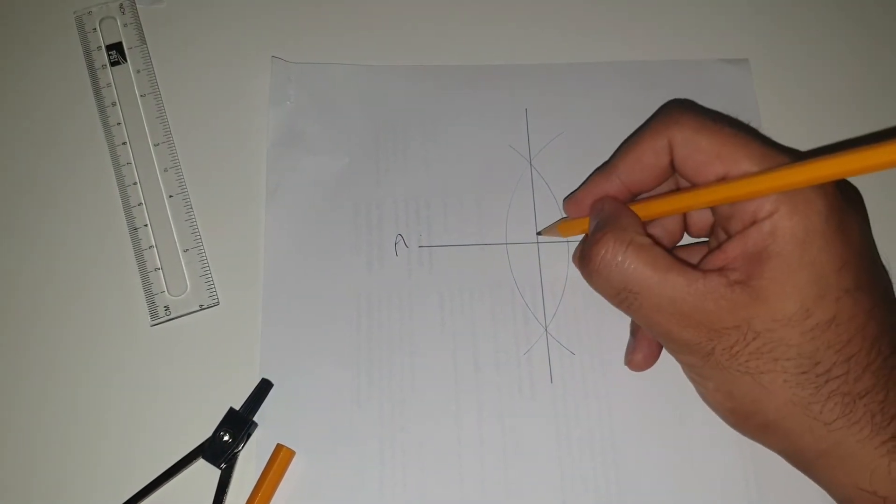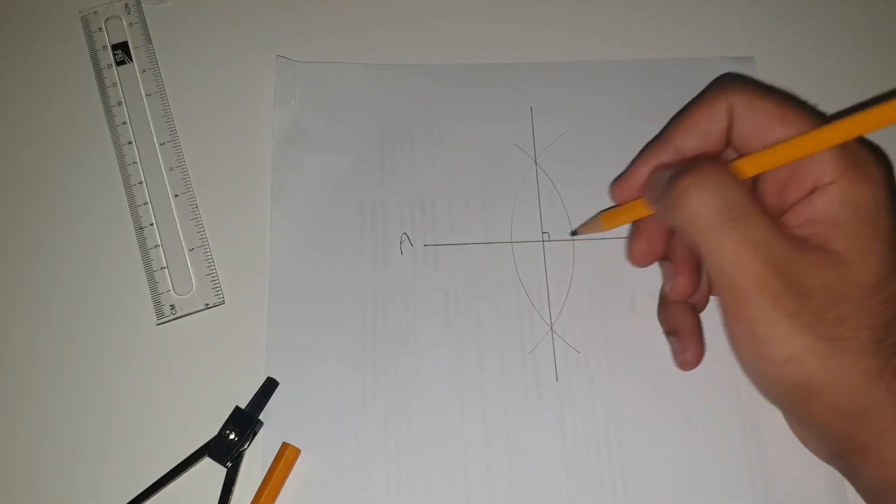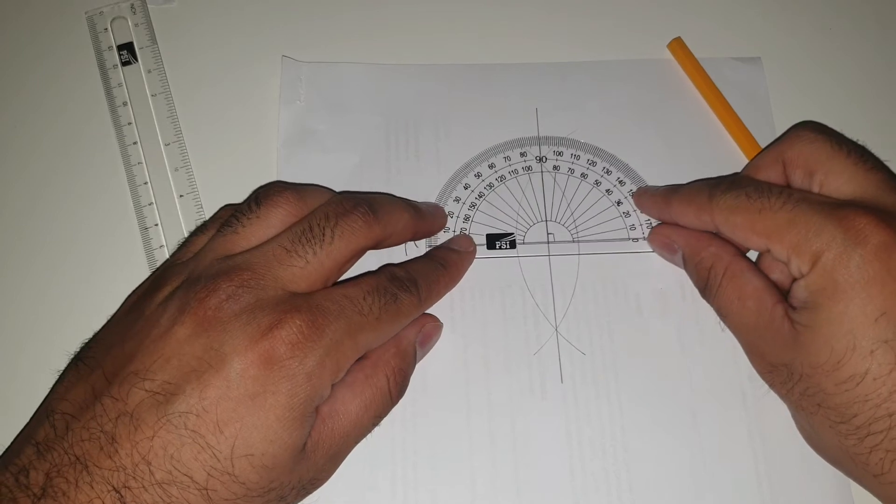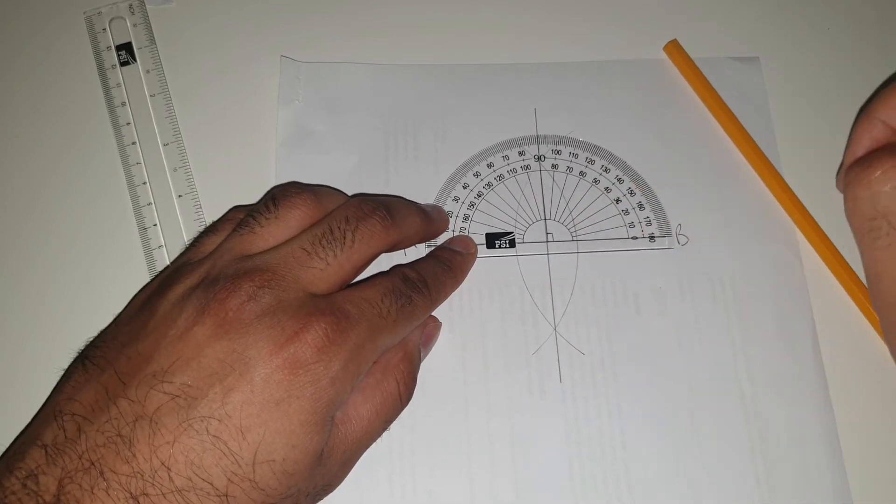Now as you can see, this cuts through the line at 90 degrees. If you want to check that, there we go. It's at 90 degrees.